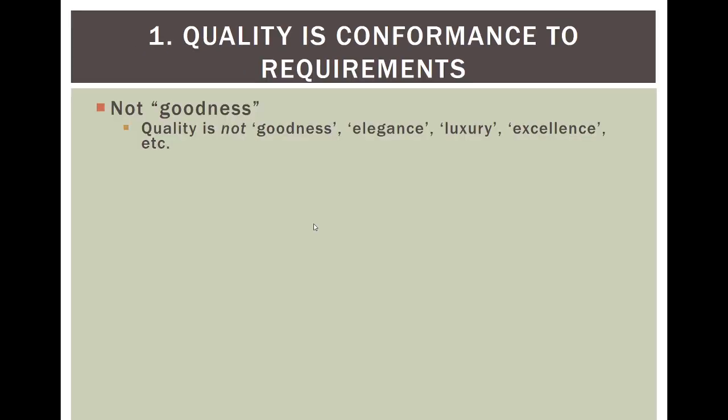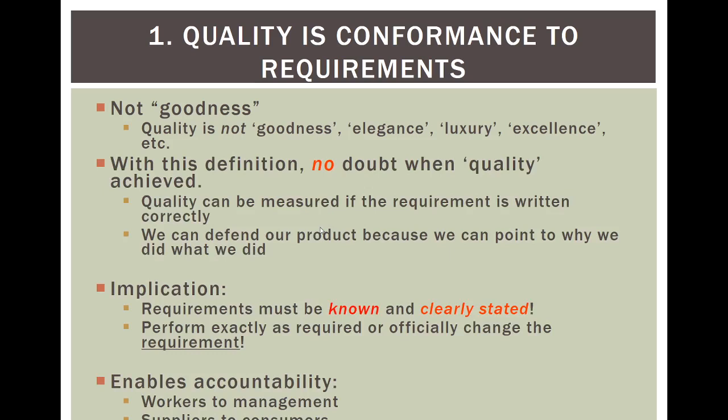We all remember Crosby and his four absolutes. Number one: quality is conformance to requirements. Quality is not goodness, elegance, luxury, or excellence — it's something objective that five different people can walk in and all arrive at the same conclusion. If it were subjective, it's much more difficult to figure out when you've actually achieved quality. Quality can be measured if the requirement is written correctly, and that's the goal of today's lecture.